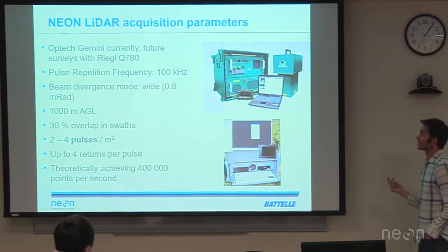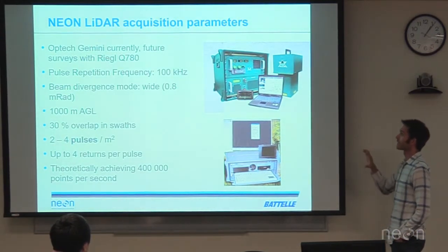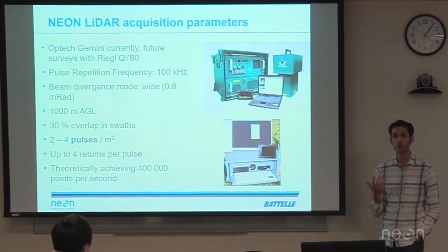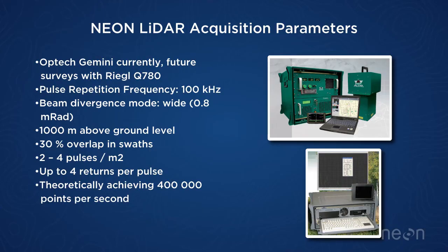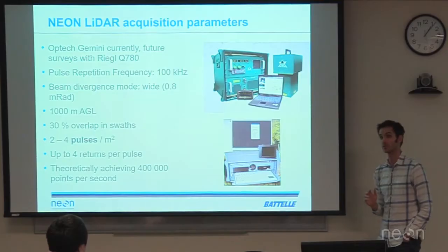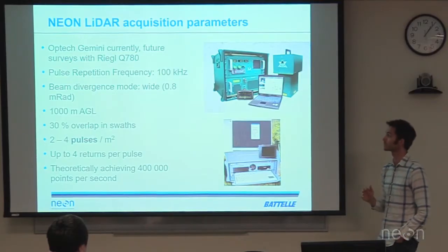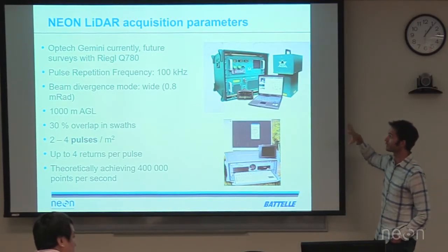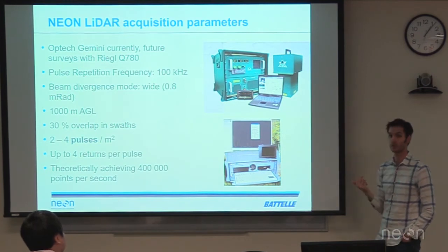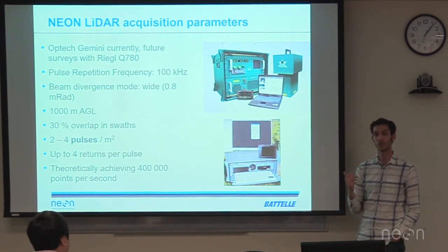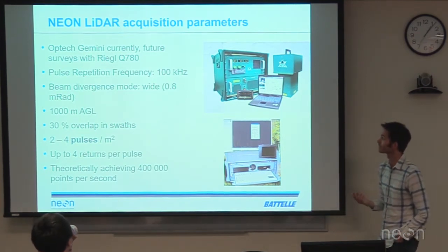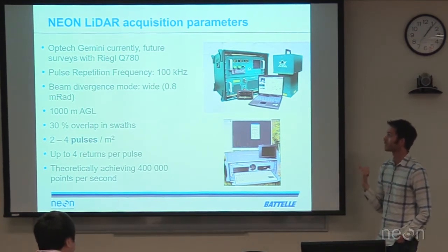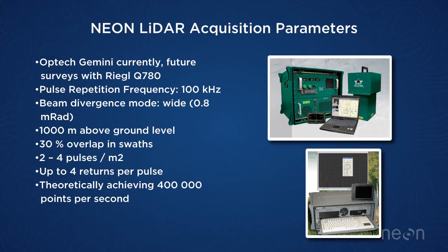NEON currently operates two Optech Gemini systems, which are slightly older technology purchased in 2011 and 2012. In the future, we'll also be doing surveys with the Riegl Q780, which is a more contemporary instrument.